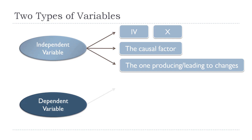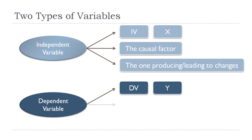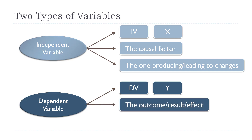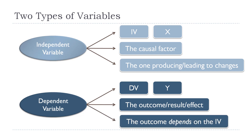Whereas the dependent variable — abbreviated as DV or Y — is the one that is the outcome, the result, or the effect. It's the outcome that depends on the independent variable. So because it depends on this other variable, that's why it's called the dependent variable. Whereas the independent variable is sort of footloose and fancy free — it's doing its own thing, but when it's doing its own thing, it's causing or leading to some change in the dependent variable.